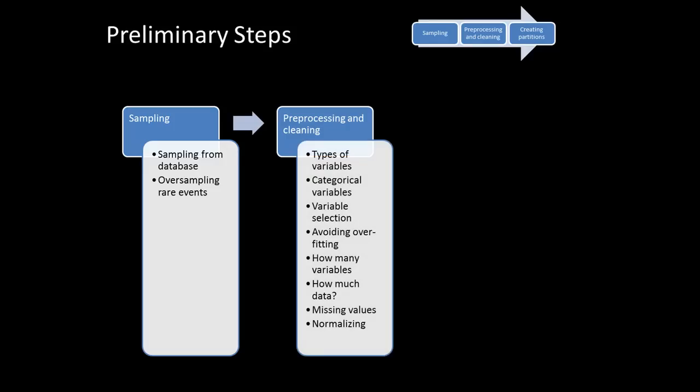The next step is preprocessing and cleaning the data. You want to identify what is the type of each of the variables. You're going to have categorical variables because not all information is numeric. How do you deal with categorical variables? How do you select variables as part of data reduction? There's also the notion of overfitting a model. How many variables do we want to use? How much data? What do you do with missing values — many times you've got lots of rows of data but some rows have attributes which are missing. And then finally, there's the concept of normalizing the data.